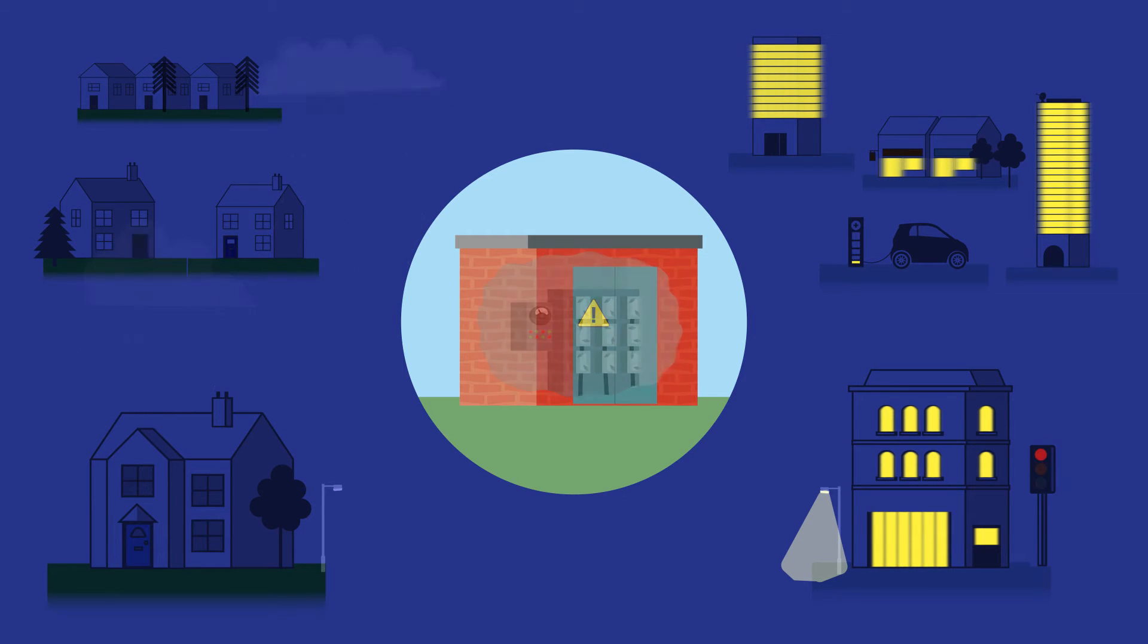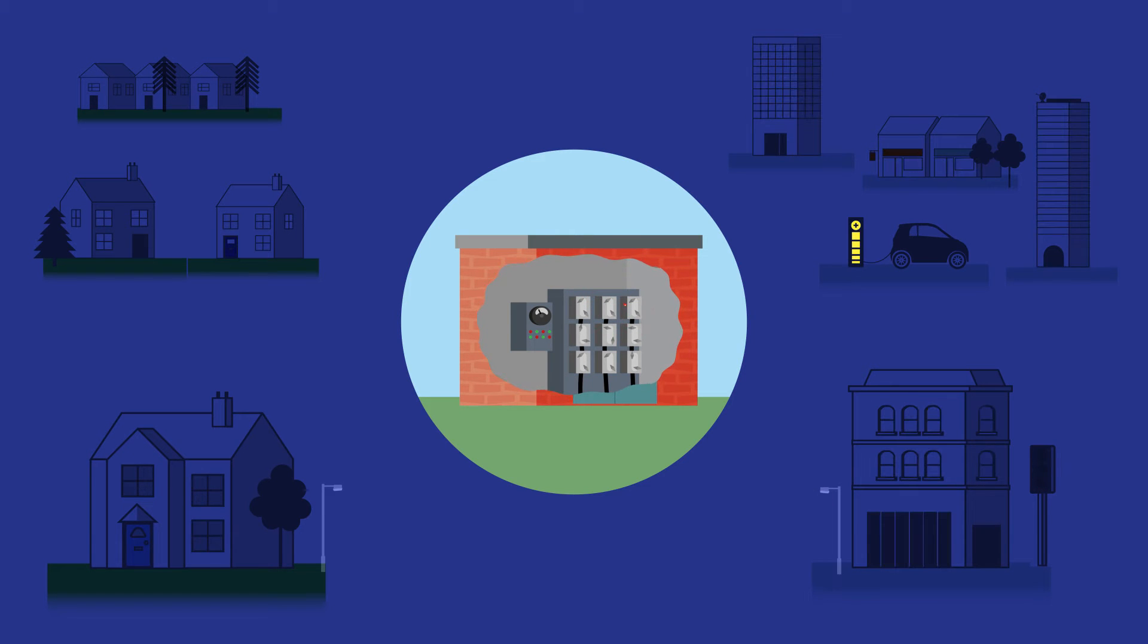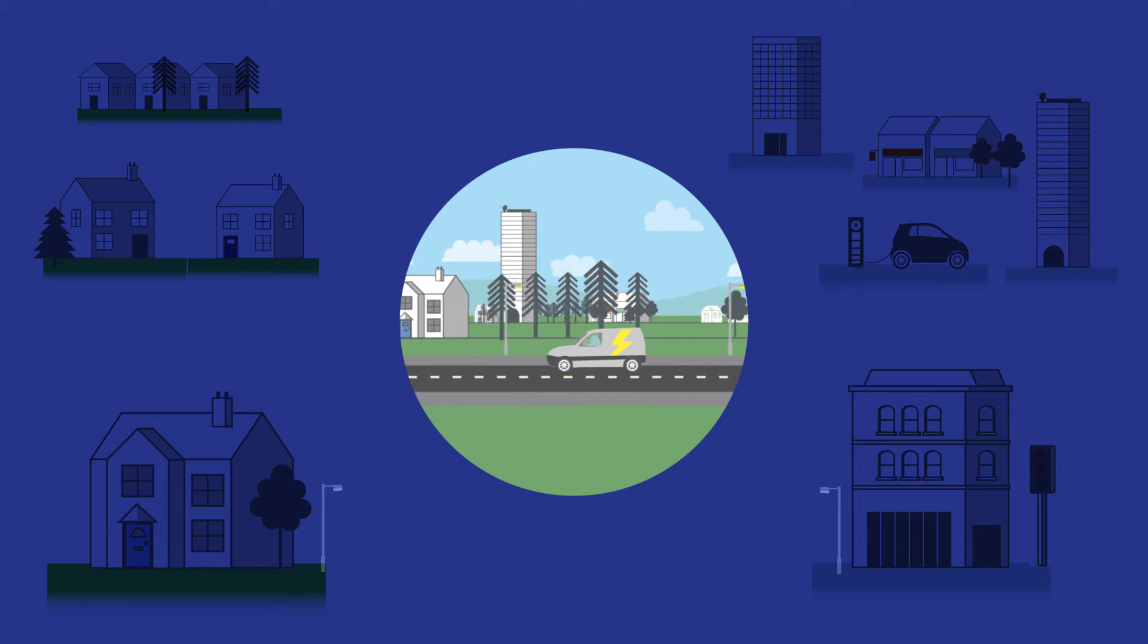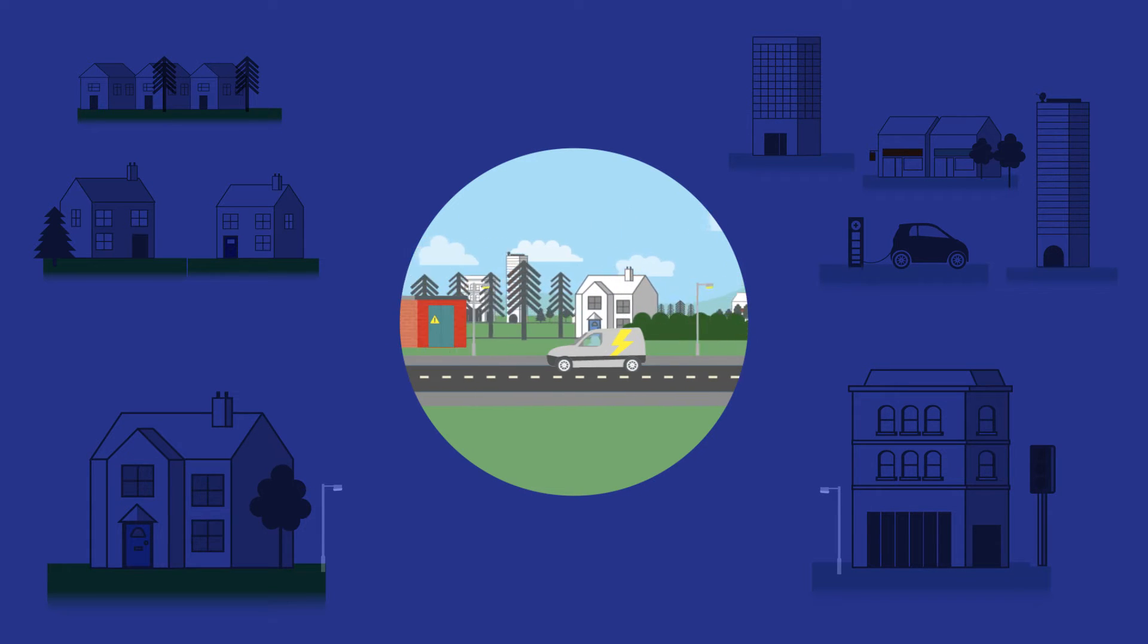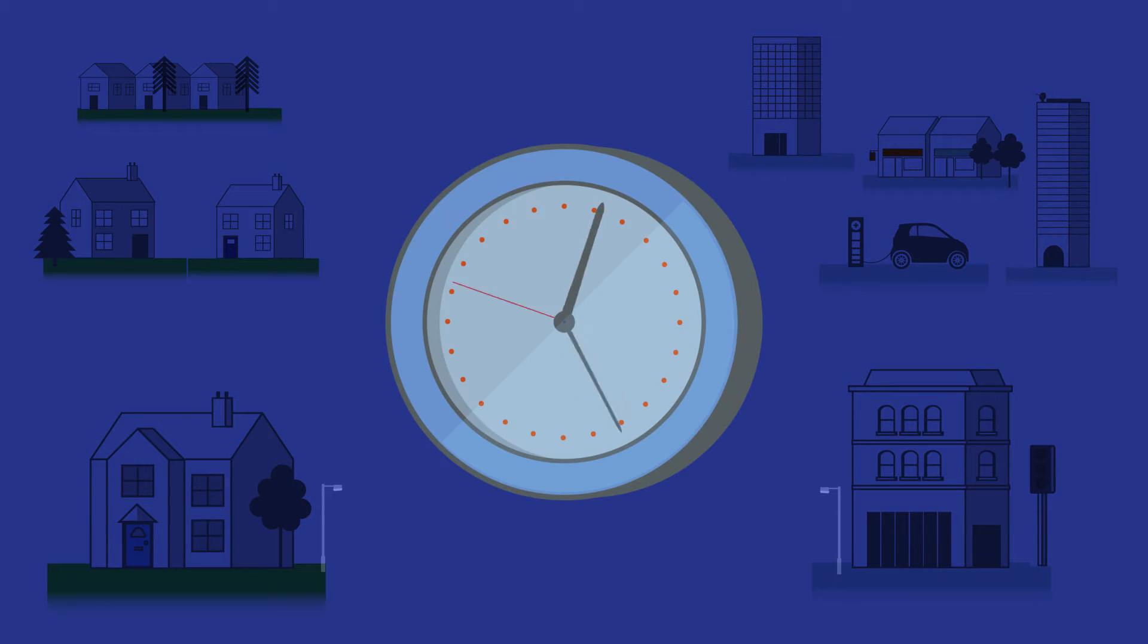In most cases, power outages happen when a fuse blows in the local substation. Before the fuse can be replaced, an engineer has to check whether it's safe to restore the power. If it's not safe and there's a fault with the electricity network, this has to be fixed. All of this can be very time-consuming.